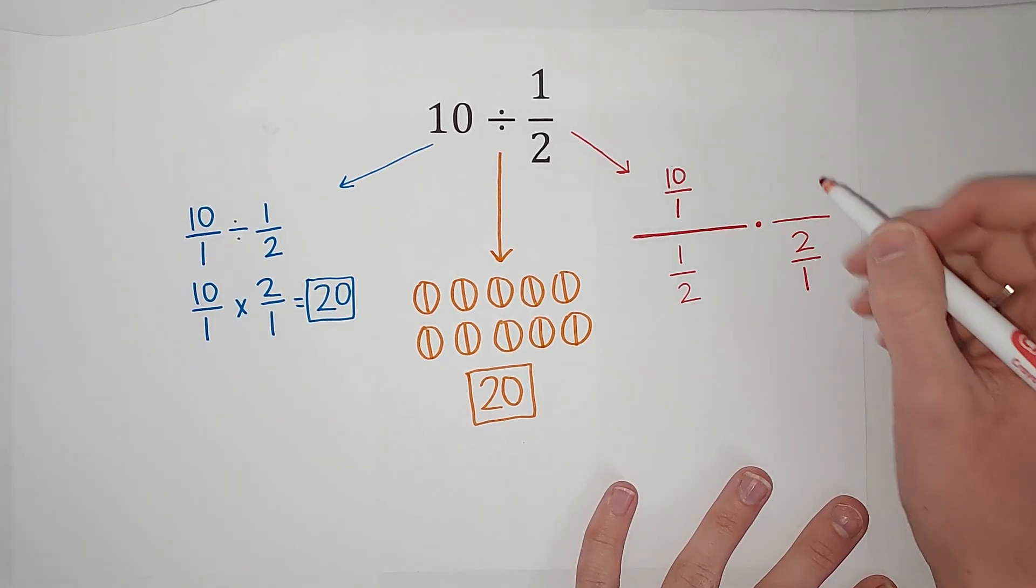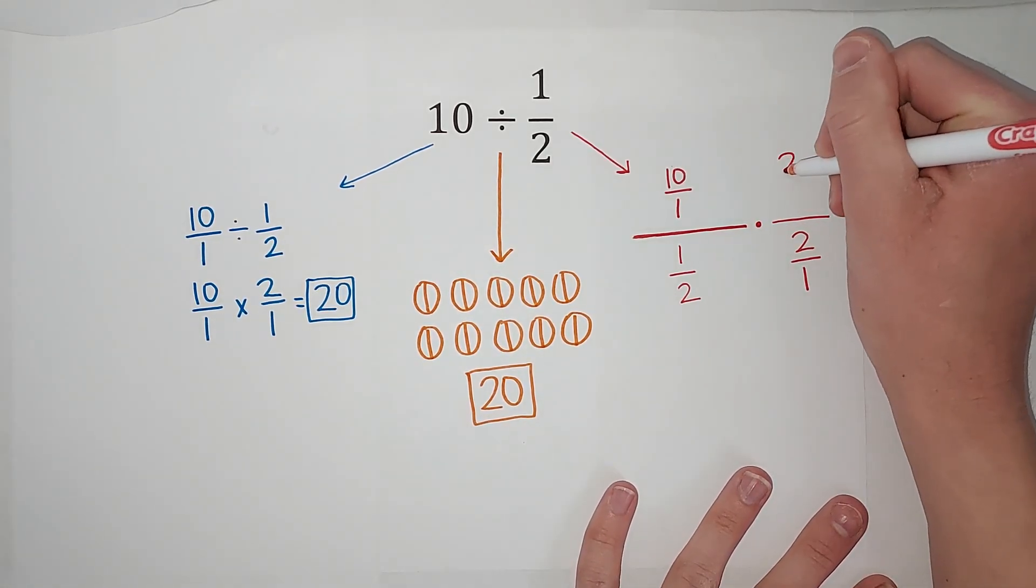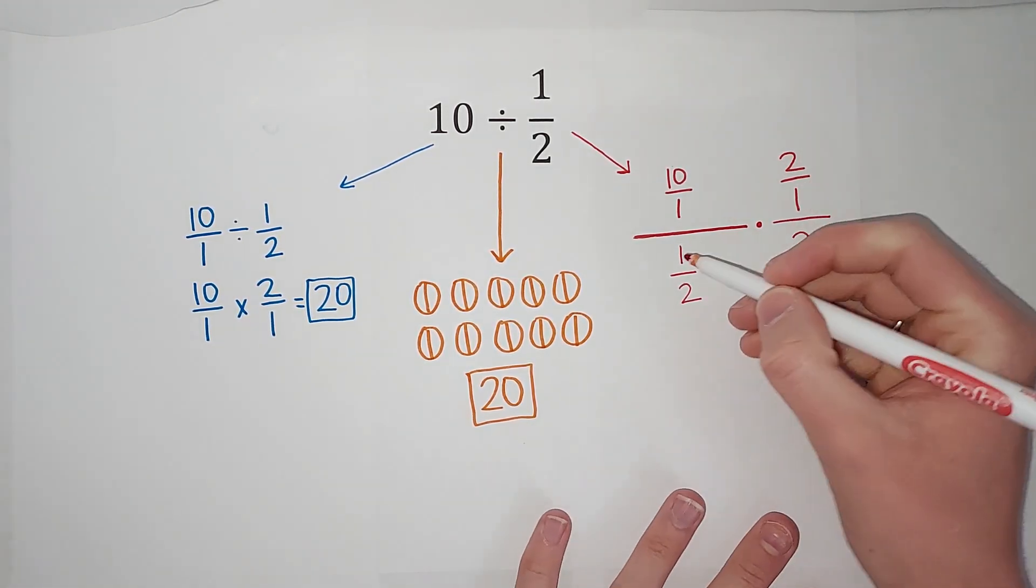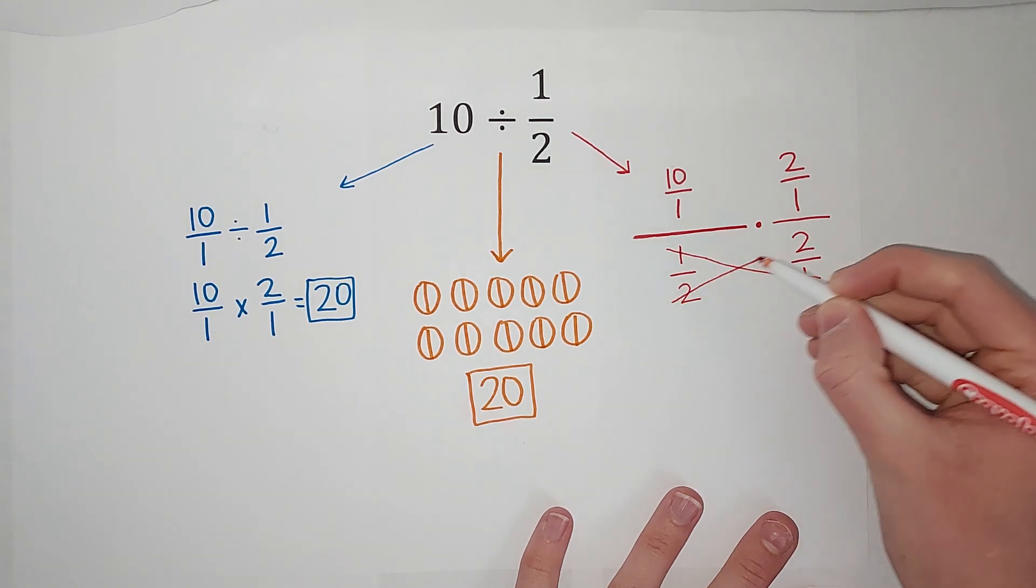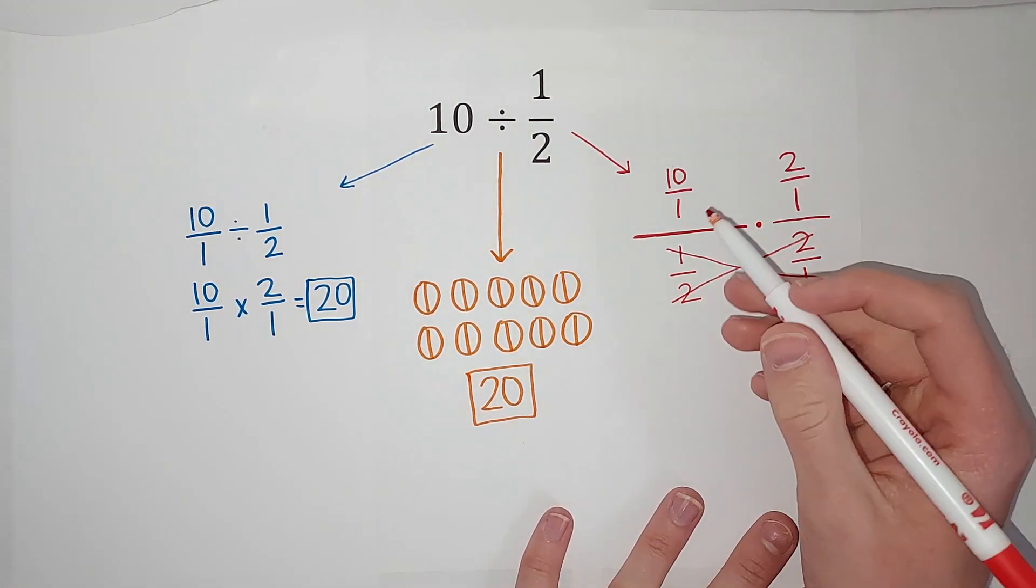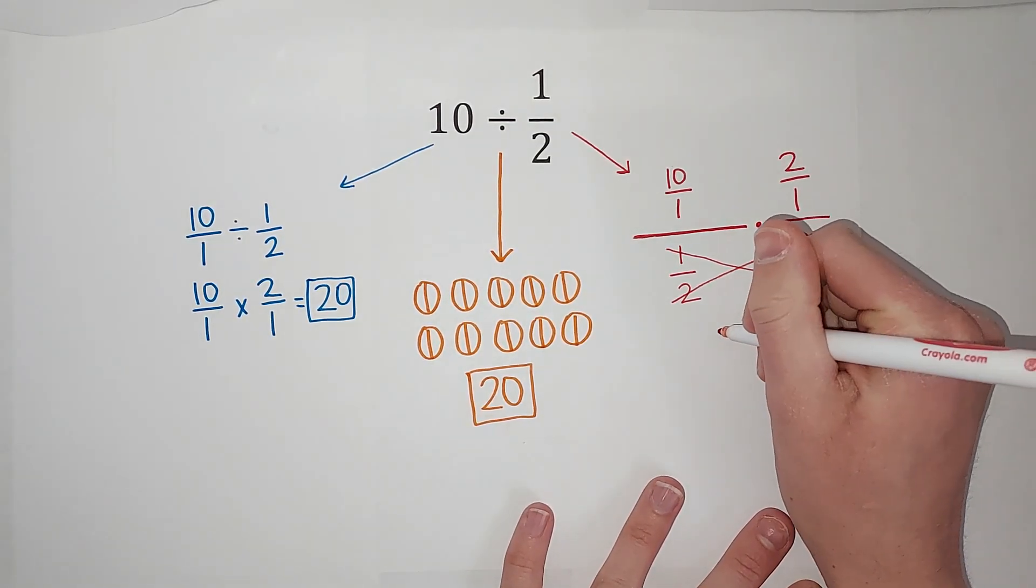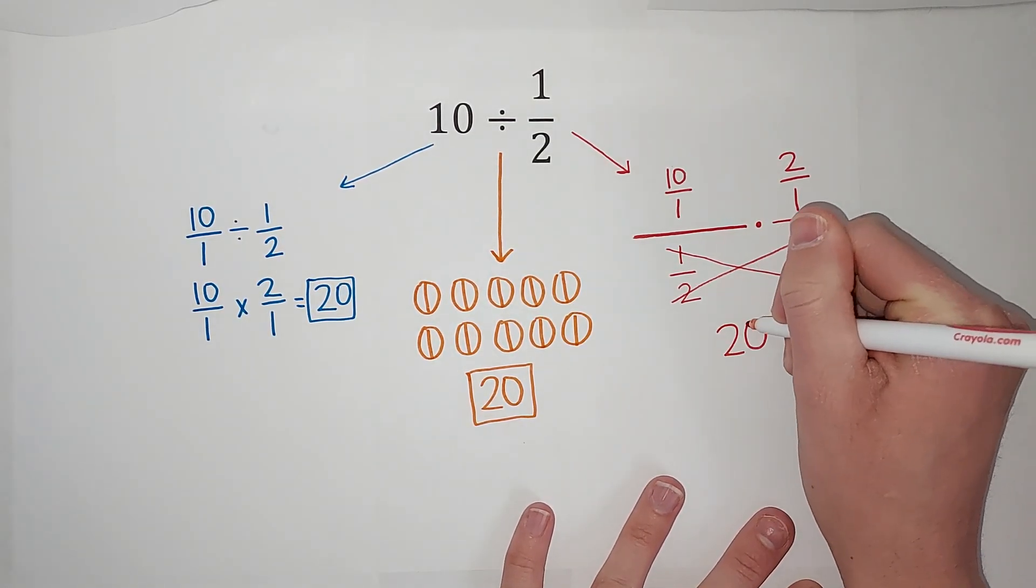But if I multiply this, I need to multiply by the same thing on top, because then this just simplifies down to 1. So these cancel and what am I left with on the top? I'm left with 10 over 1 times 2 over 1, or just 10 times 2, which gives me 20.